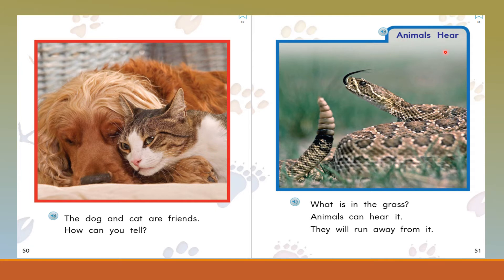Animals hear. What is in the grass? Animals can hear it and they will run away. That animal, boys and girls, is a rattlesnake, and rattlesnakes are very dangerous. At the top of the snake's tail is a rattle, and when the snake feels threatened it starts shaking its tail. Other animals hear it and they run.